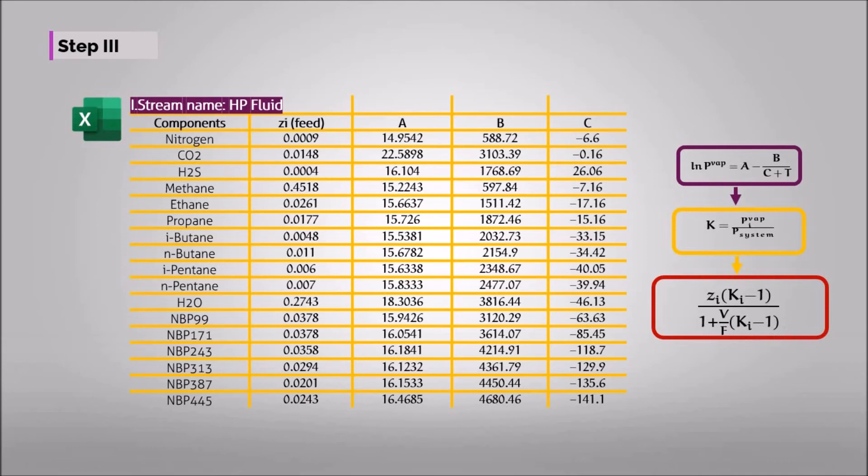This value is the main objective of this calculation, so you should be more careful on this calculation. To determine the value of V over F automatically, the Goal Seek function in the Excel can be of great help.